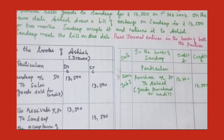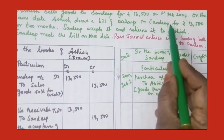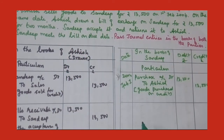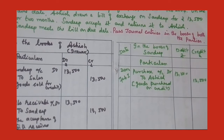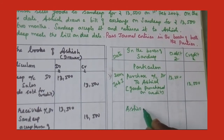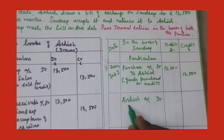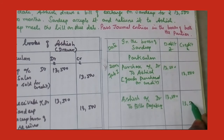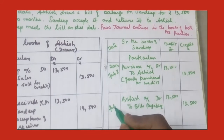The next transaction: Ashish draws a bill of exchange on Sandeep for Rs. 13,500 for 2 months. Sandeep accepts it — when he accepts, he will receive the bill, sign it, and return it back to Ashish. The bill goes out of the business for him. Ashish is the receiver of the bill, so we debit Ashish. Ashish account debit to bills payable account — Rs. 13,500, on February 1.